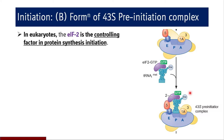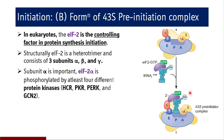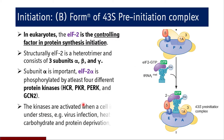In eukaryotes, EIF2 is the controlling factor in protein synthesis initiation, as it is bound to GTP and to the first tRNA involved in translation. EIF2 is a heterotrimer consisting of three subunits — alpha, beta, and gamma — of which alpha is the most important. EIF2 alpha is phosphorylated by at least four different protein kinases: HCR, PKR, PERK, and GCN2. These kinases are activated when a cell is under stress — viral infection, heat shock, or metabolic disturbances like carbohydrate and protein deprivation.